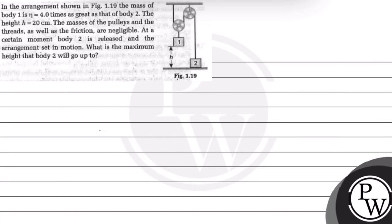Hello, let's read this question. The question says, in the arrangement shown, the mass of body 1 is 4 times as great as that of body 2.